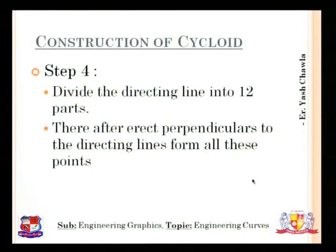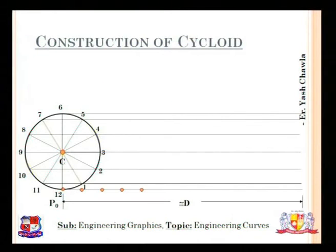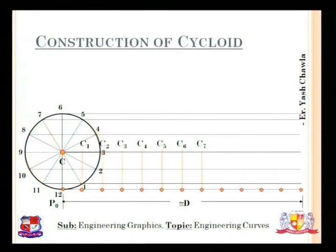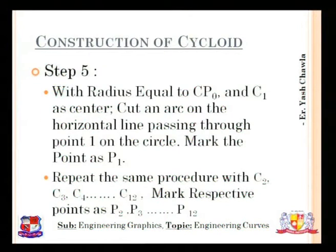Step 4: Divide the directing line into 12 equal parts. Erect perpendicular lines from each division point up to the center line passing through C. Mark these centers as C1, C2, C3 up to C12. These points C1 to C12 depict the different positions of the center as the circle rotates along the directing line.